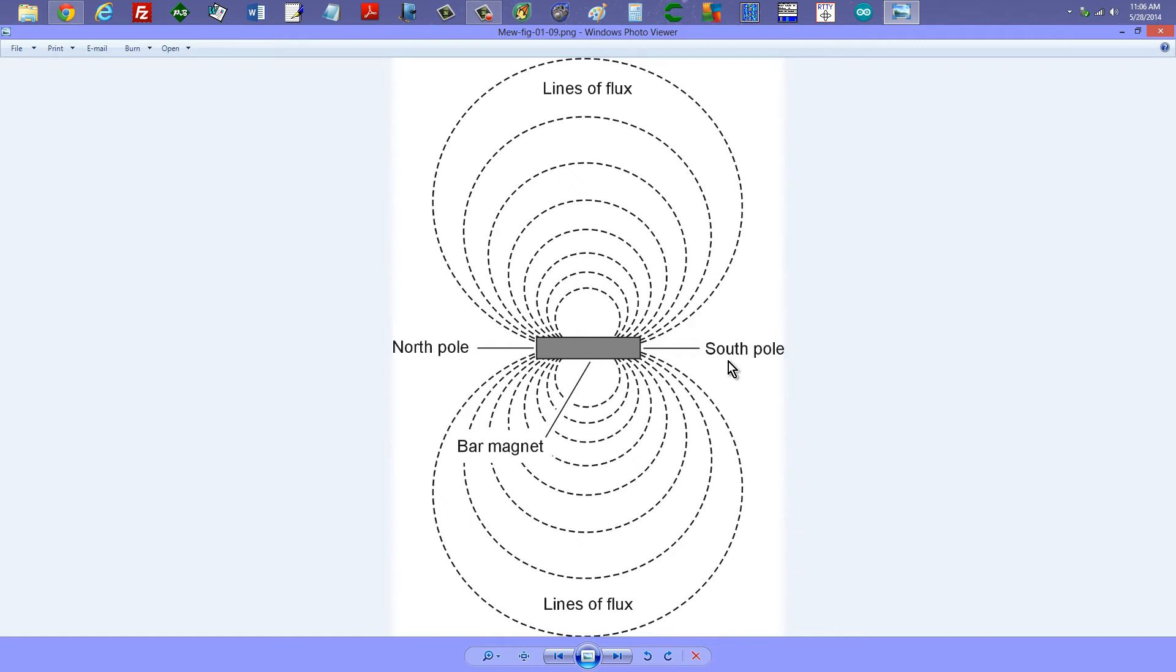So in fact, the Earth is like a huge bar magnet with a north pole at the south magnetic pole and a south pole at the north magnetic pole. Go figure, you'll read all about that though in the book.